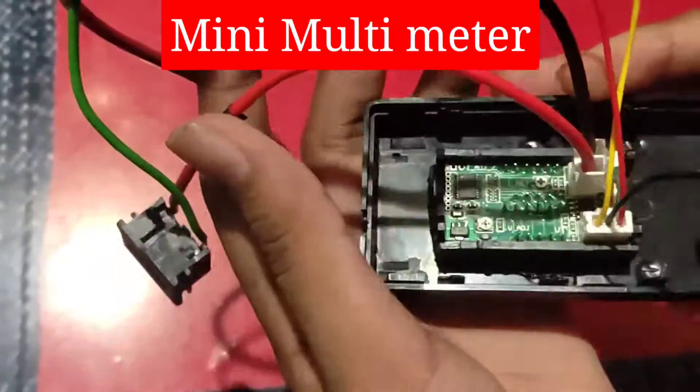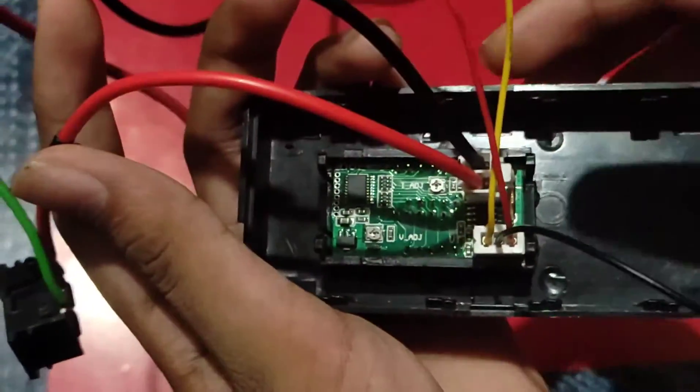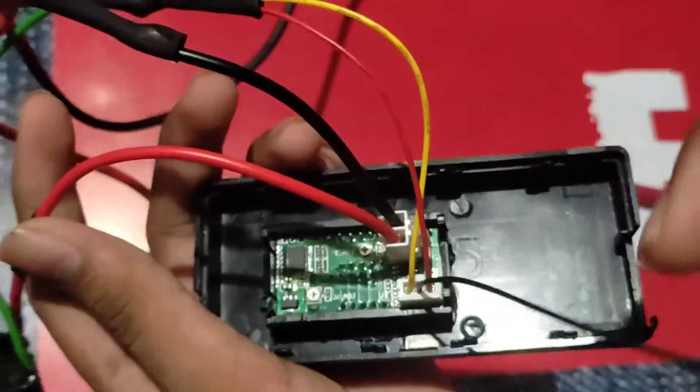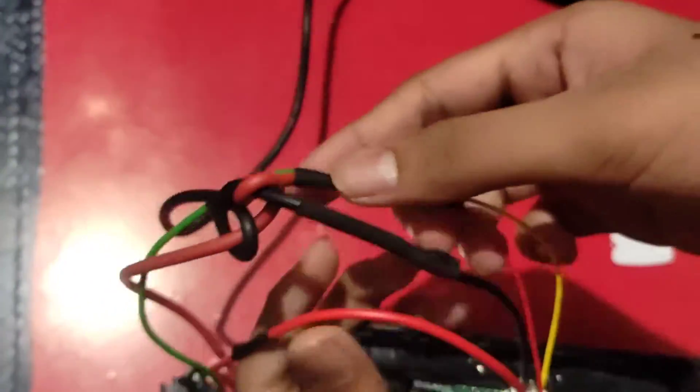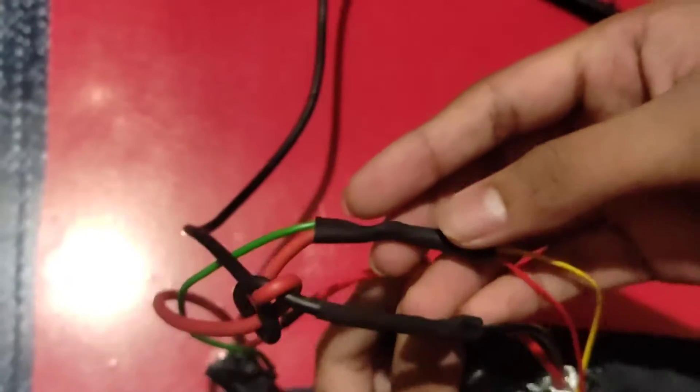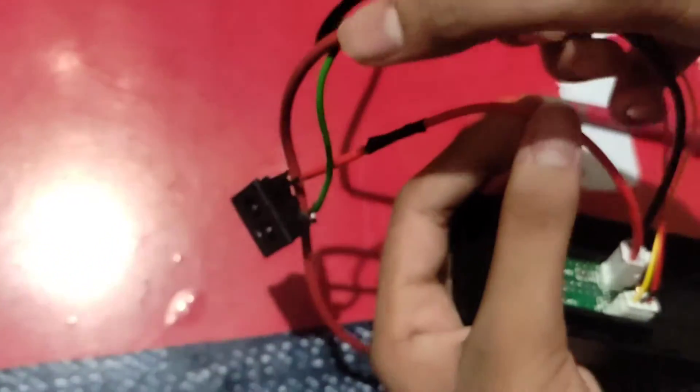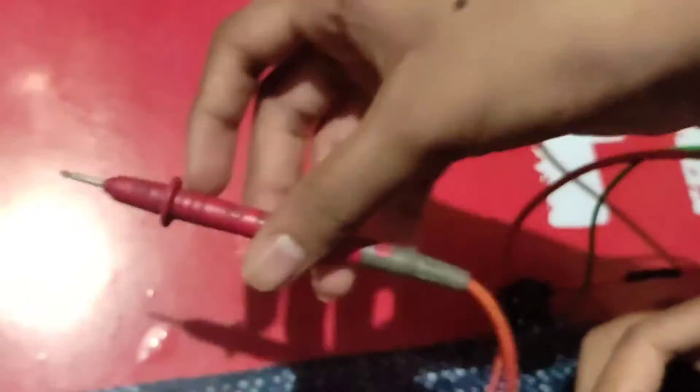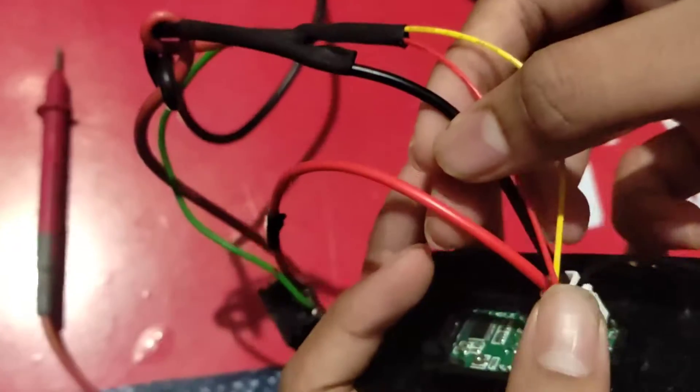Let's get started guys. You can see this is the mini multimeter. If you want the circuit diagram, I will give the link in description you can download there. If you want this meter, I will give the buying link in description you can check it out. These are the connections you can make through the circuit diagram that is given in the description.